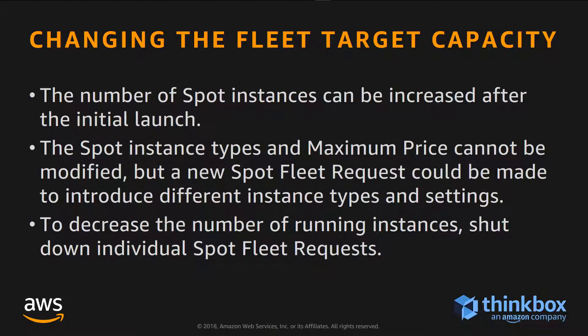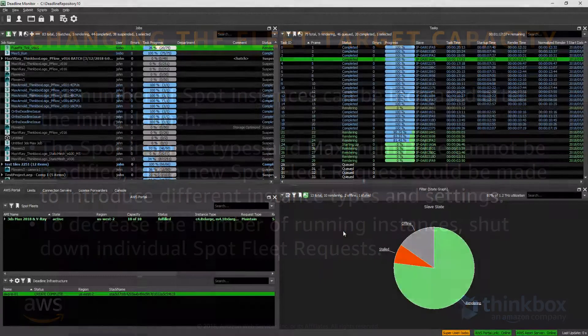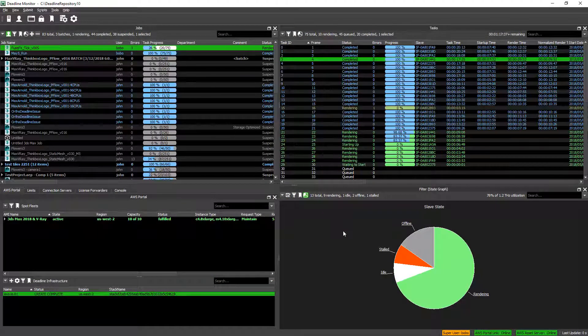Let's take a look at the fleet target capacity. We can change this to add more machines to render. We cannot change other parameters of the SpotFleet request, but we can launch a new SpotFleet request if we want different instance types or a different maximum price. If we want to shut down machines, we can shut down some of those SpotFleet requests and the corresponding machines will go down.